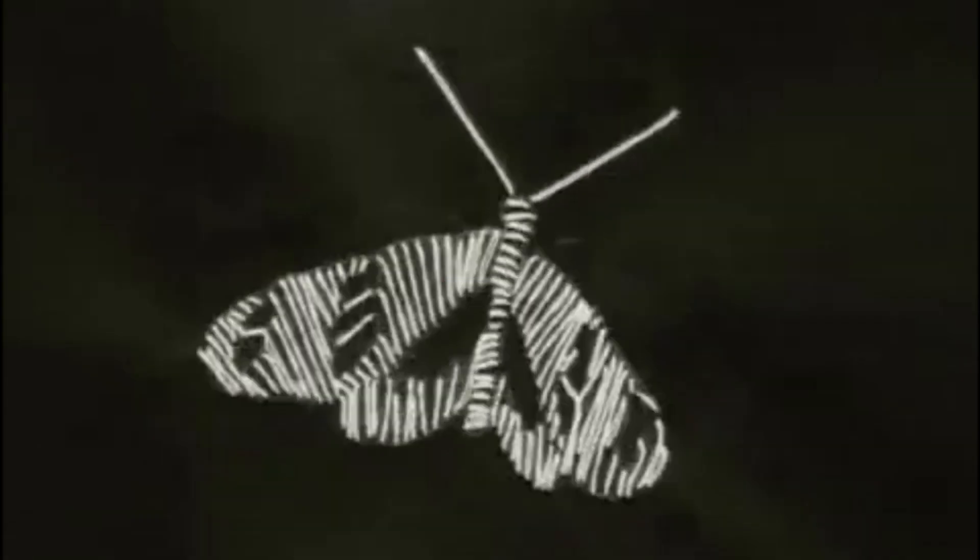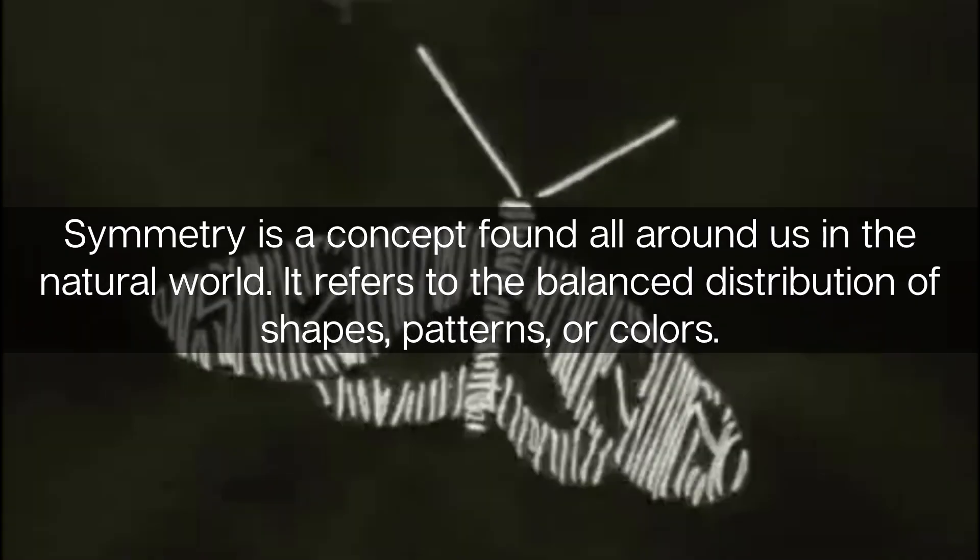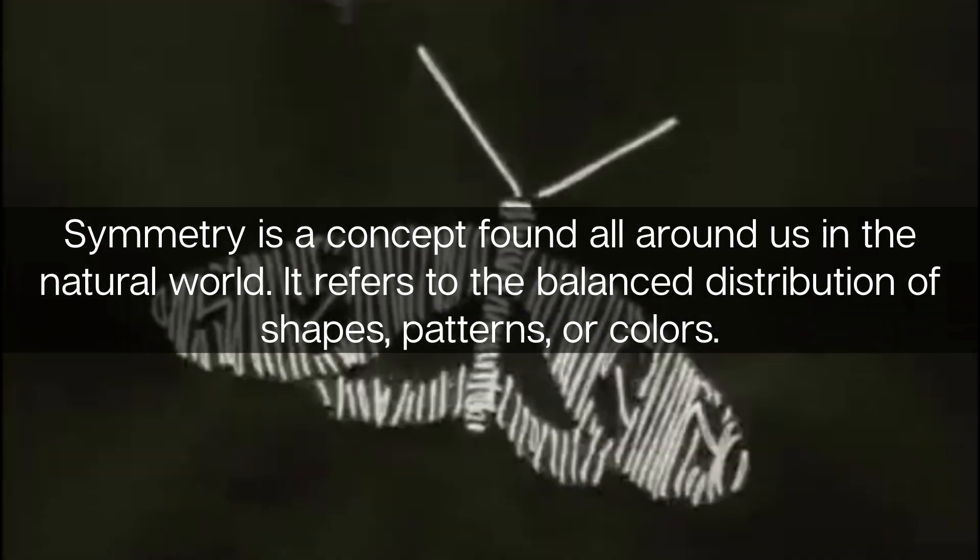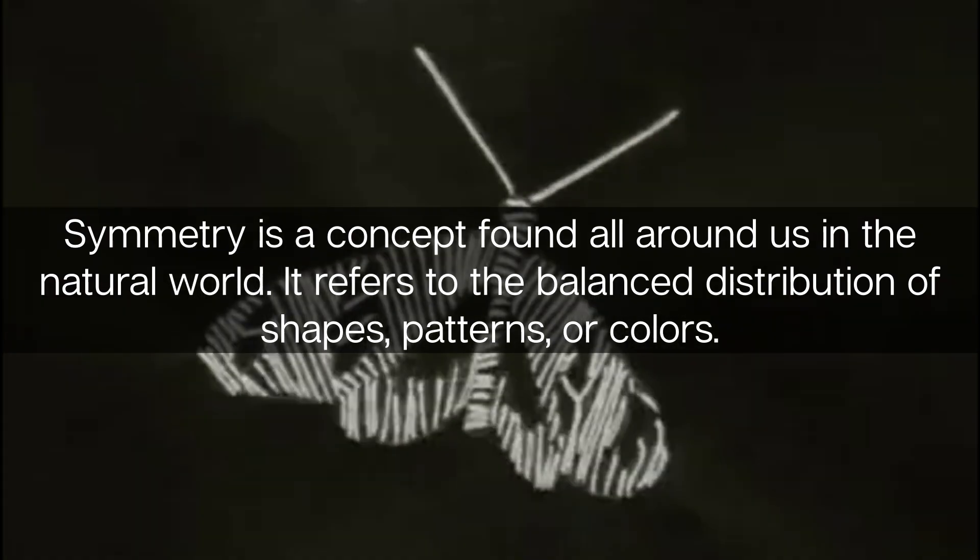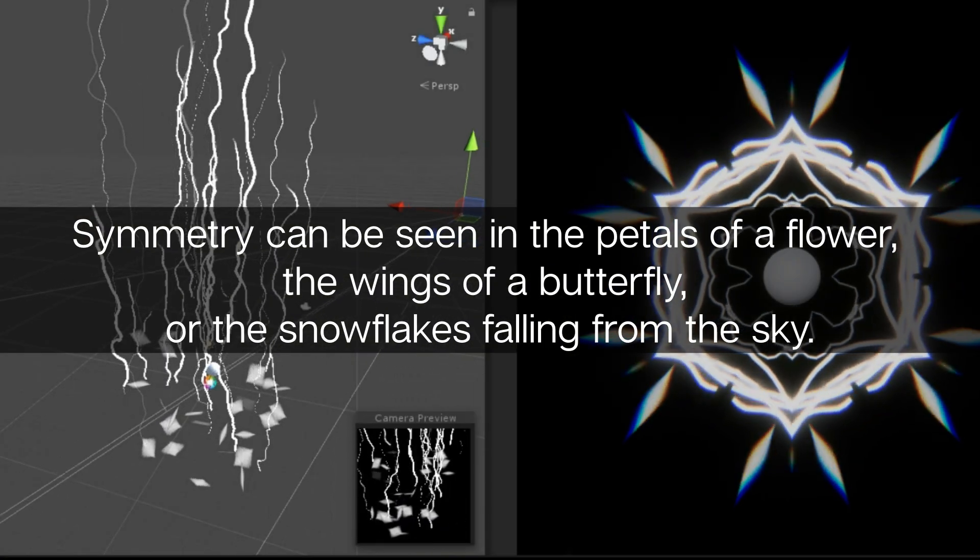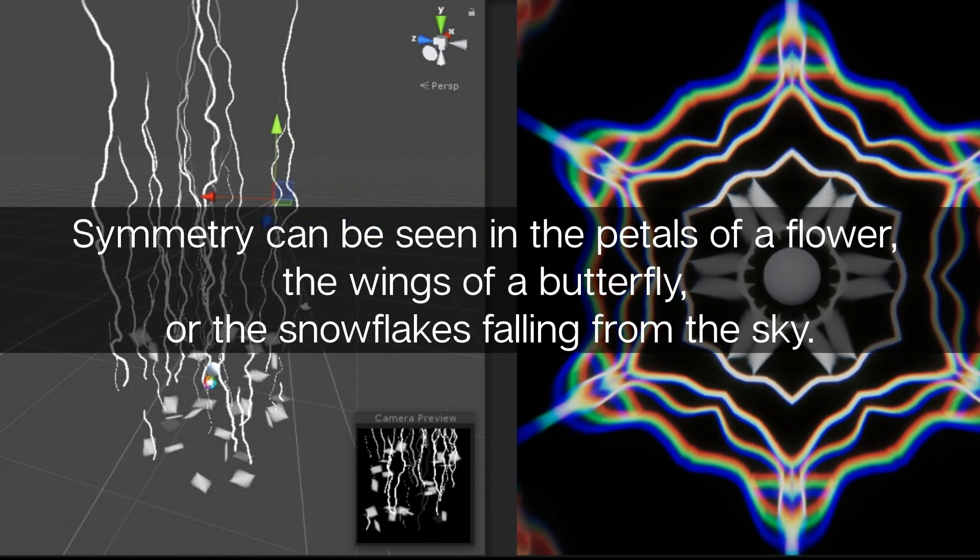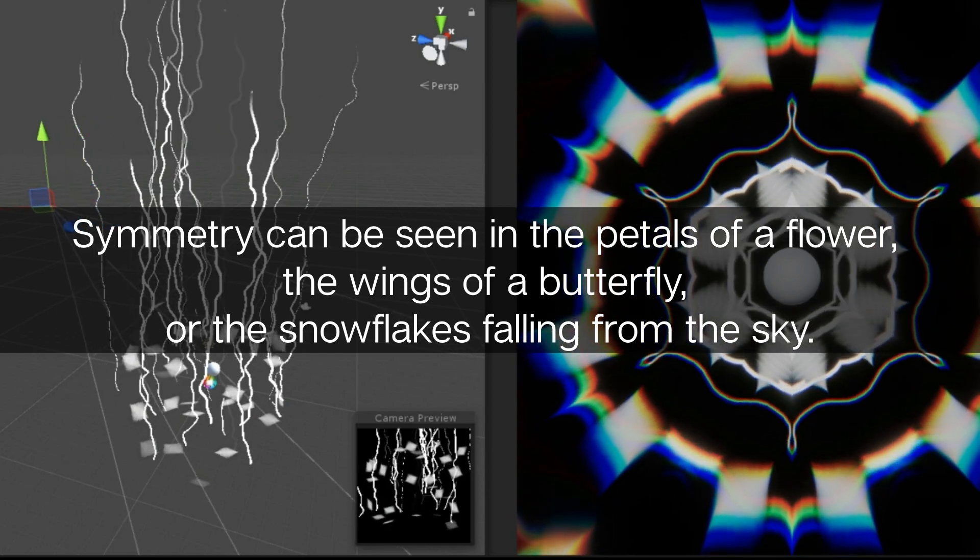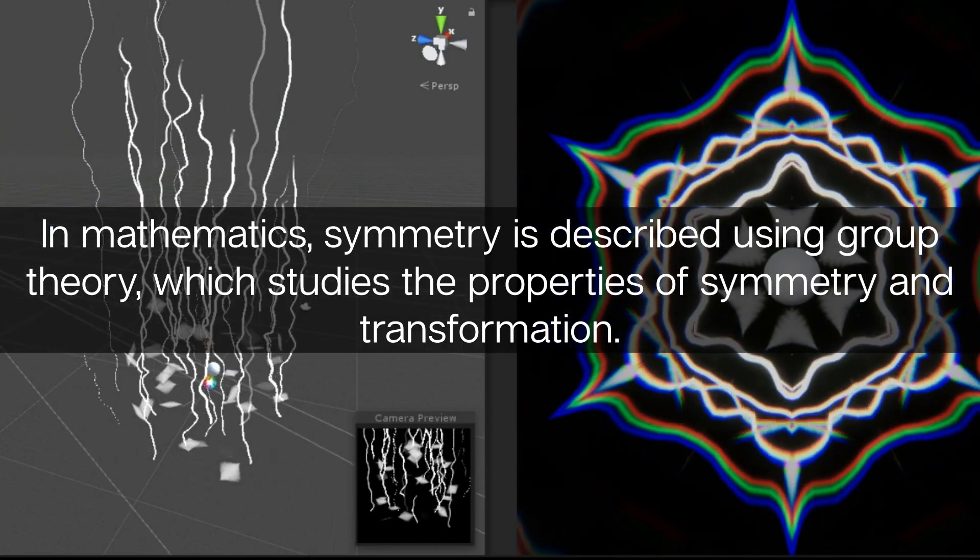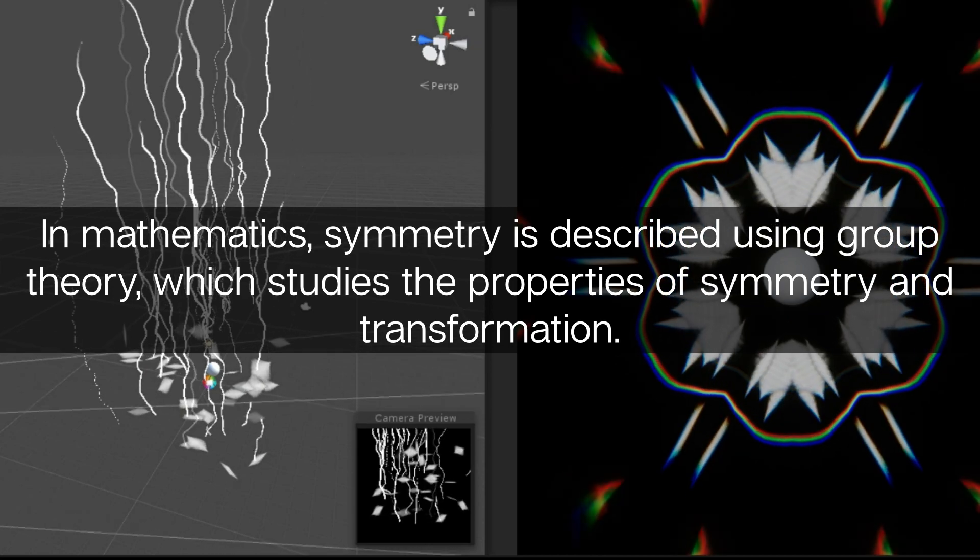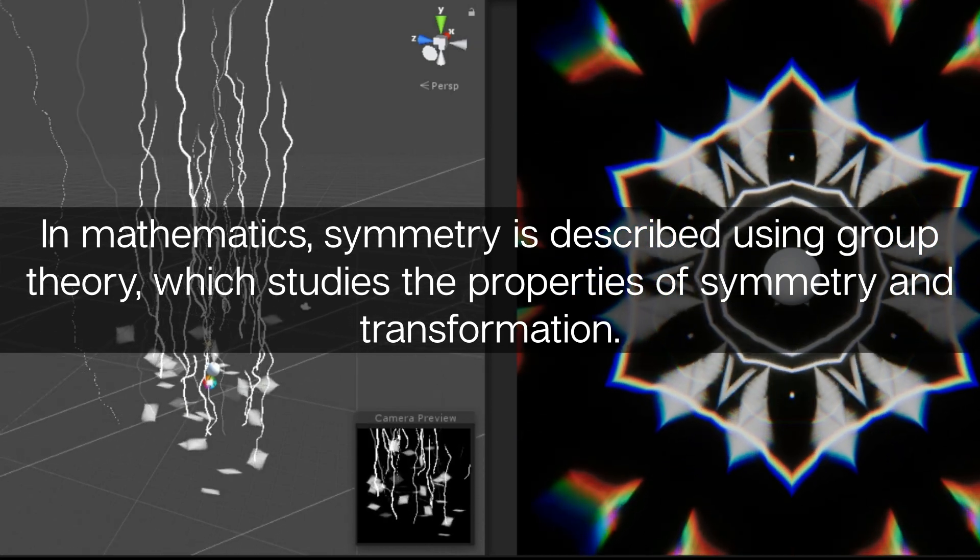Symmetry. Symmetry is a concept found all around us in the natural world. It refers to the balance and distribution of shapes, patterns, or colors. Symmetry can be seen in the petals of flowers, the wings of a butterfly, or the snowflakes falling from the sky.